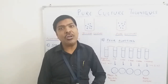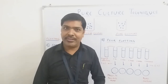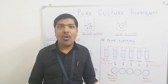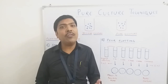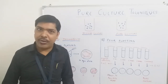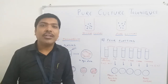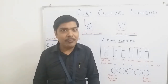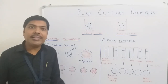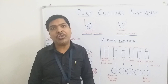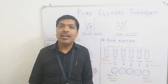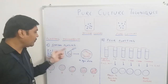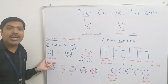The sterilization process of the inoculation loop is very easy. We place the nichrome wire loop on a Bunsen burner and wait until it becomes red hot. Once it becomes red hot, we wait a few seconds to let it cool. Because of this red-hot exposure to the flame, whatever microorganisms or bacteria were initially on the surface of the inoculation loop will be destroyed and the loop becomes sterilized.